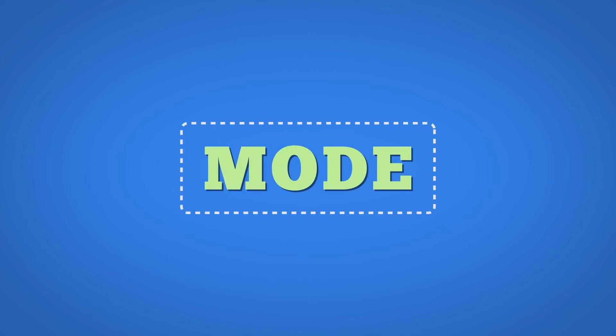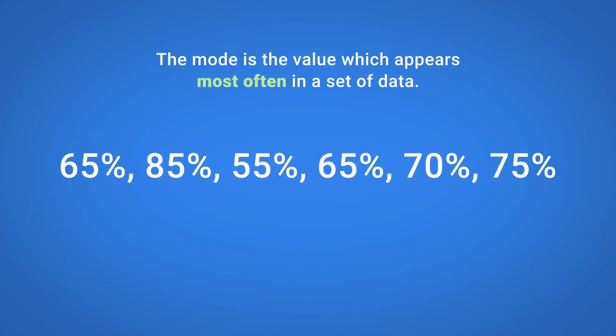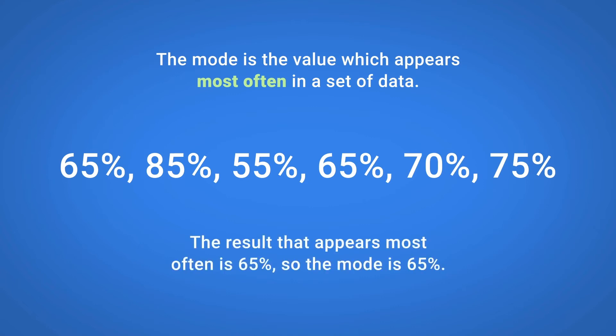Finding the Mode. The Mode is the value which appears most often in a set of data. The test results for a group of students are 65%, 85%, 55%, 65%, 70%, and 75%. The result that appears most often is 65%, so the Mode is 65%.